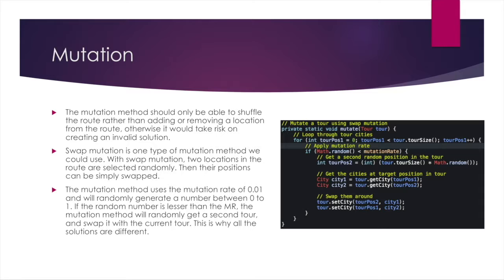In our mutation method, we use the mutation rate of 0.01 and the method will randomly generate a number between 0 to 1. If the random number is less than the mutation rate, the mutation method will randomly select a second tour and will swap it with the first tour. This is why all the solutions generated by this genetic algorithm are different. And I will now pass on to my groupmate Colin to finish off. Thank you.